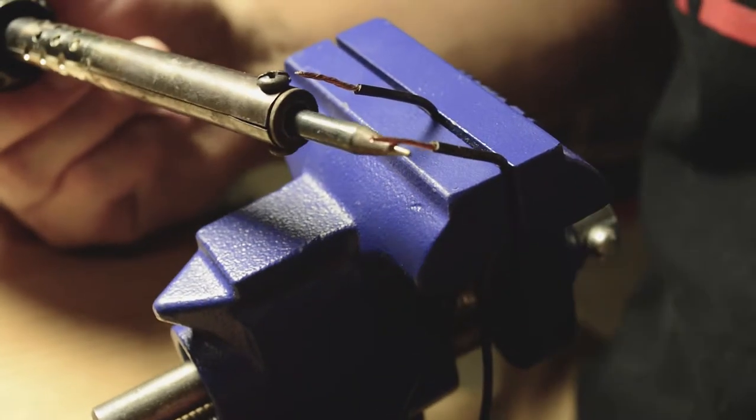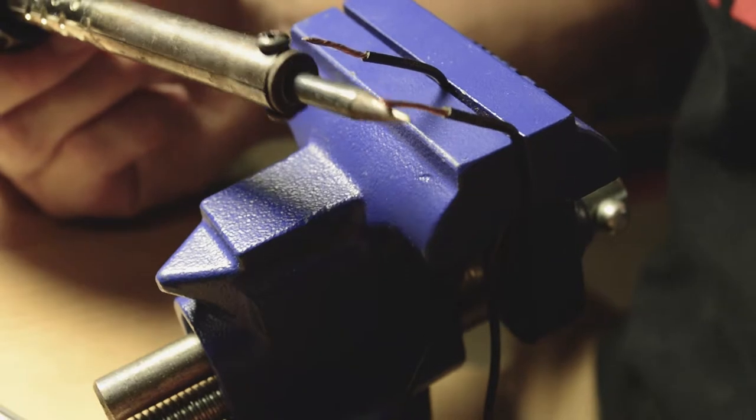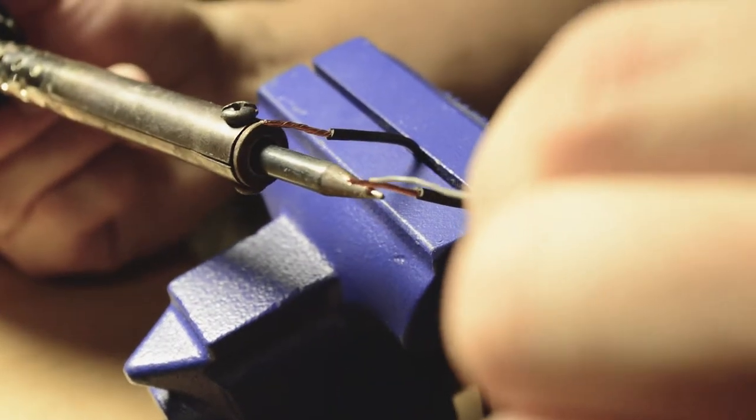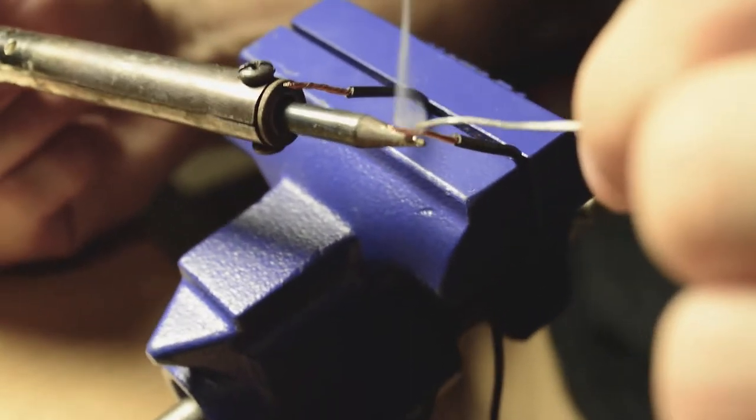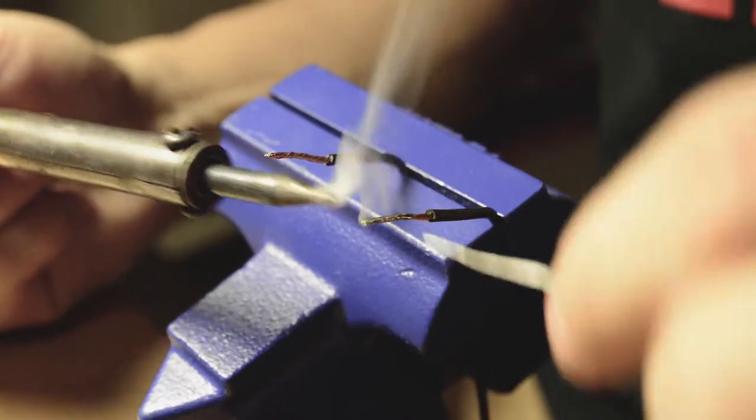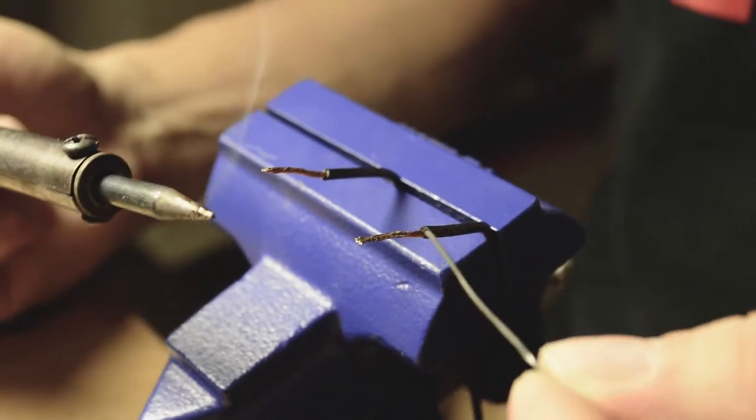So the first thing I'm going to do is apply heat to the wire, not the solder. What you want to do is heat the wire up so the wire itself melts the solder. I apply a little bit of solder to the gun and as you can see the wire itself melts the solder, not the gun.